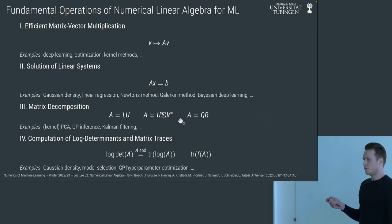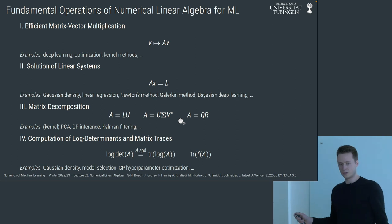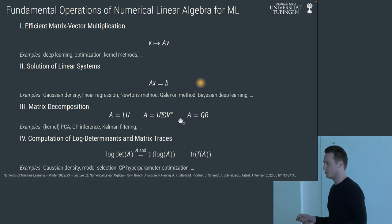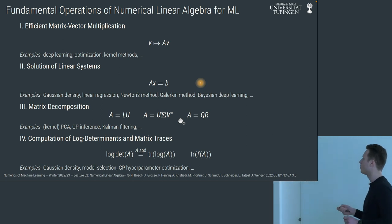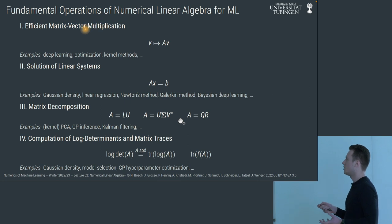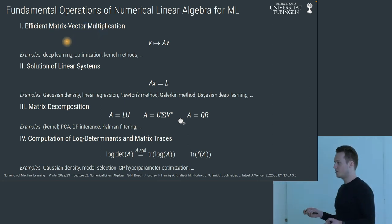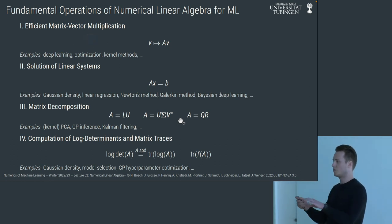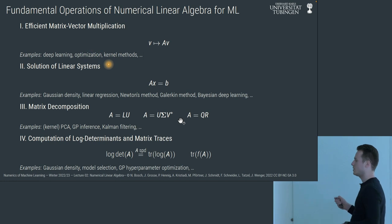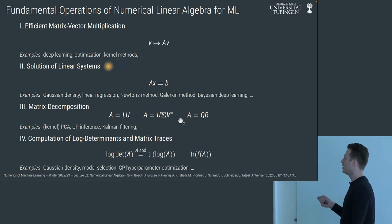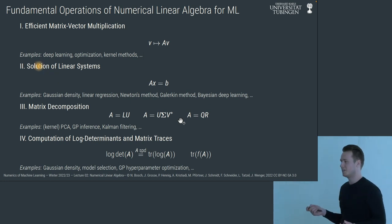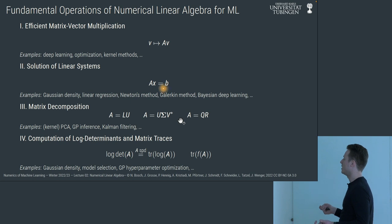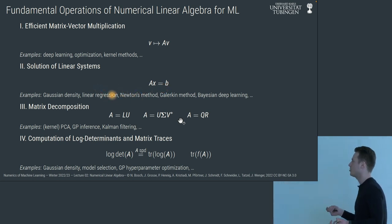Now that we've seen all these methods, the key takeaway is that four fundamental operations appear everywhere in machine learning. First, matrix-vector multiplication — we need many of these, so they should be efficient in both computation time and memory. This appears in deep learning, optimization (inverse Hessian times gradient), and kernel methods. Second, the solution of linear systems — seen in the Gaussian density, Gaussian process case, linear regression, Newton's method, and more.